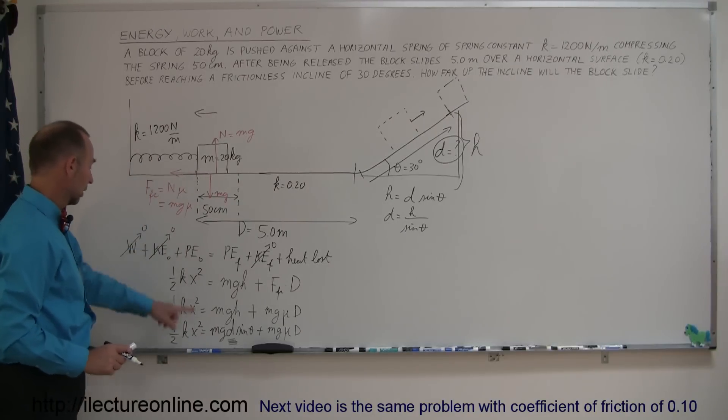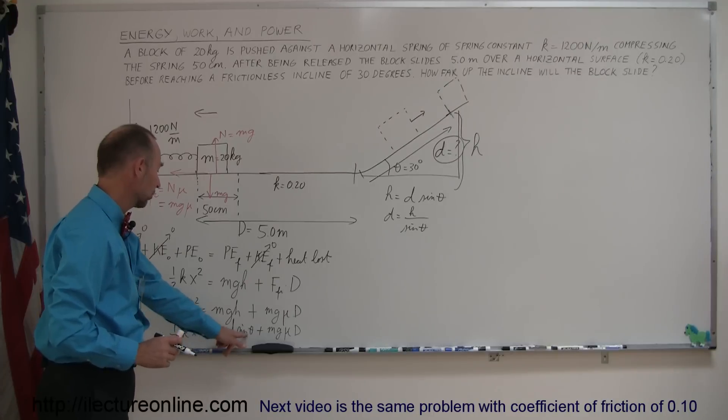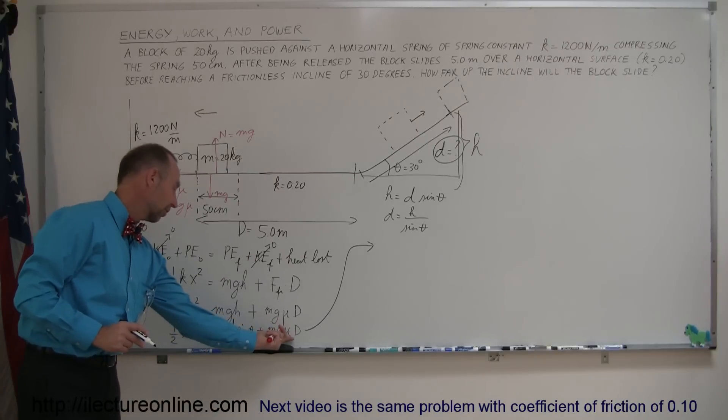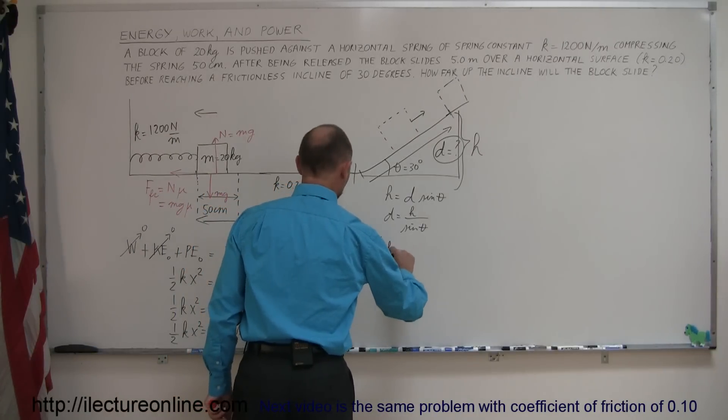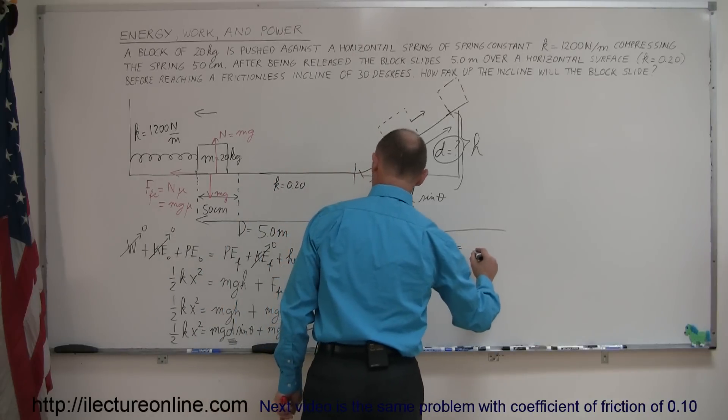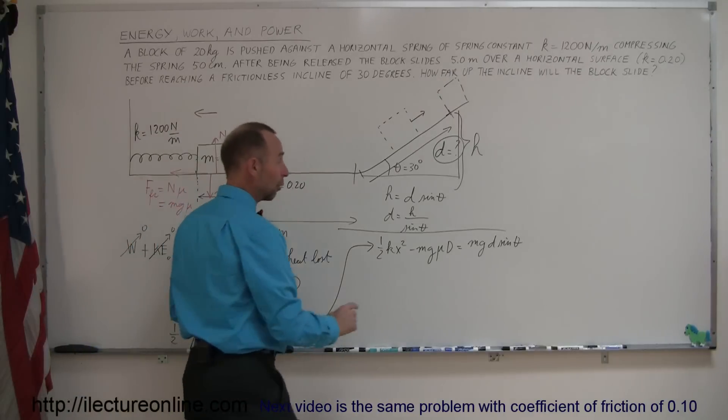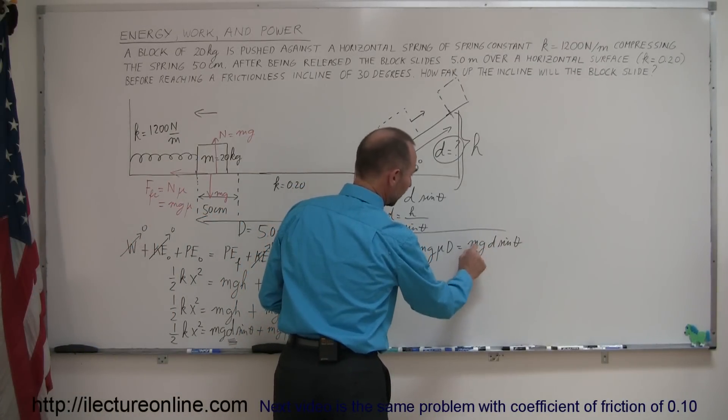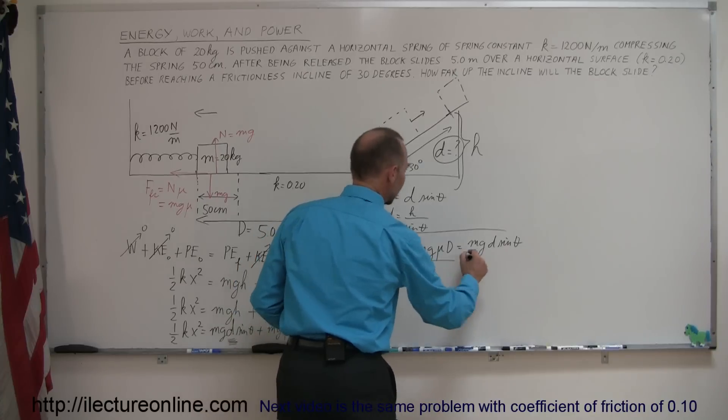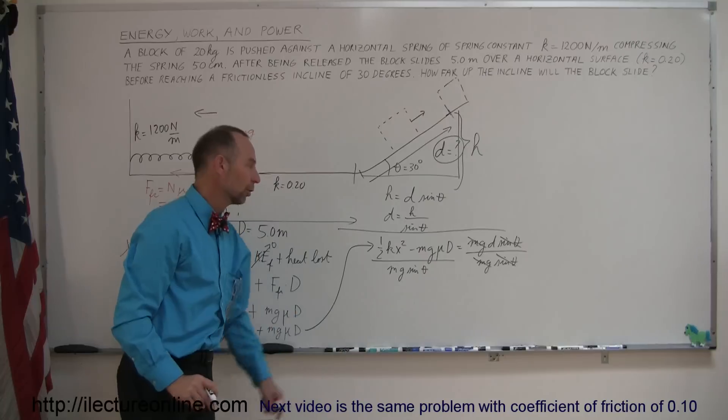So one more conversion of the equation. We have ½kx² equals mg times d sine theta plus mg mu D. And the only thing we don't know here is this distance right here, the distance of the incline. So we now have to solve that equation for small d. Everything else should be known: k is known, the amount of distance the spring was compressed, the amount of distance that we travel over the rough surface. We know the mass, g, the angle theta, and mu. So now let's solve this equation for d. We're going to move this term to the other side. So now we have ½kx² minus mg mu D equals mg d sine theta. And then if we divide both sides by mg sine theta, notice that the mg cancels out, the sine of theta cancels out, and we're just left with d being equal to what we have on the left side of the equation.